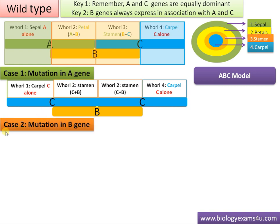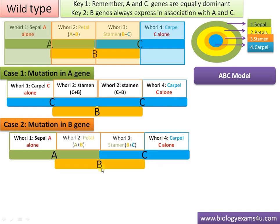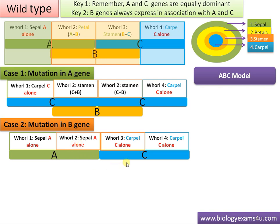Case two: mutation in B gene. As stated in the key, B gene can only be expressed in association with A and C. If B gene is inactive, A and C become dominant. A gene gives rise to sepal, and since there is no B gene, sepal formation occurs again in whorl two. C gene forms carpel in whorl three, and C gene forms carpel again in whorl four. So the result is sepal, sepal, carpel, carpel.